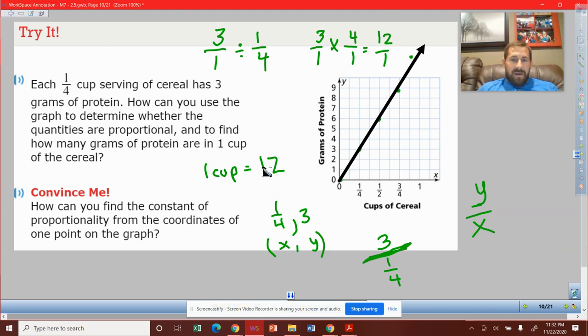So that's what we thought. That's our constant of proportionality. So y equals 12x is the equation we can write. If I plug in one-fourth there, one-fourth of 12 is 3.